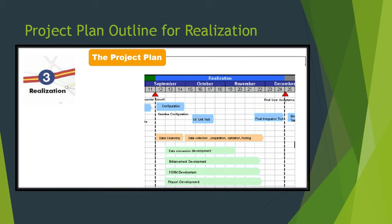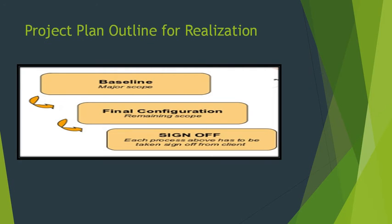We need to define the project plan outline for realization. The configuration and customization will be done by our functional consultants, the ABAP coding will be done by our ABAPers, and unit testing and system testing will be done by software testers. We are defining the baseline finding, the final configuration, and after everything, we again take sign-off with the client.